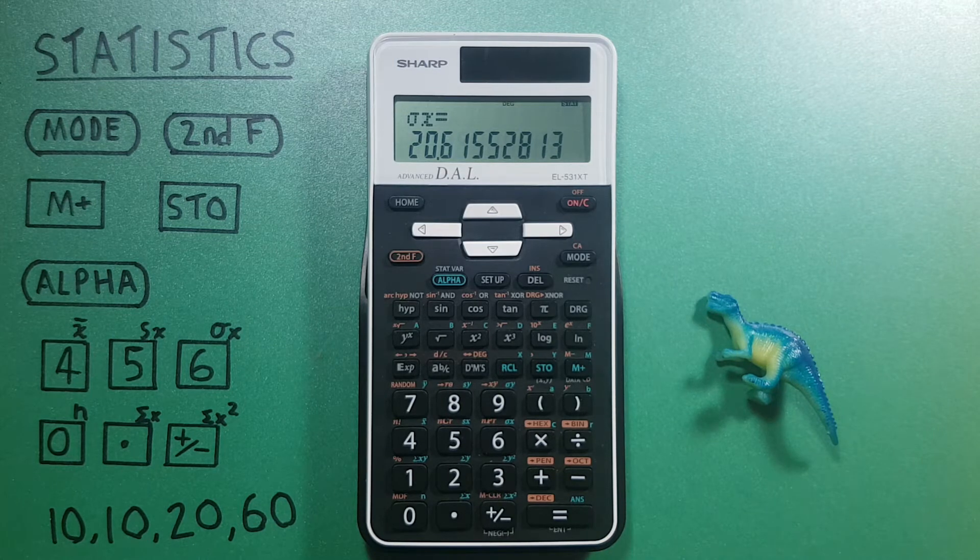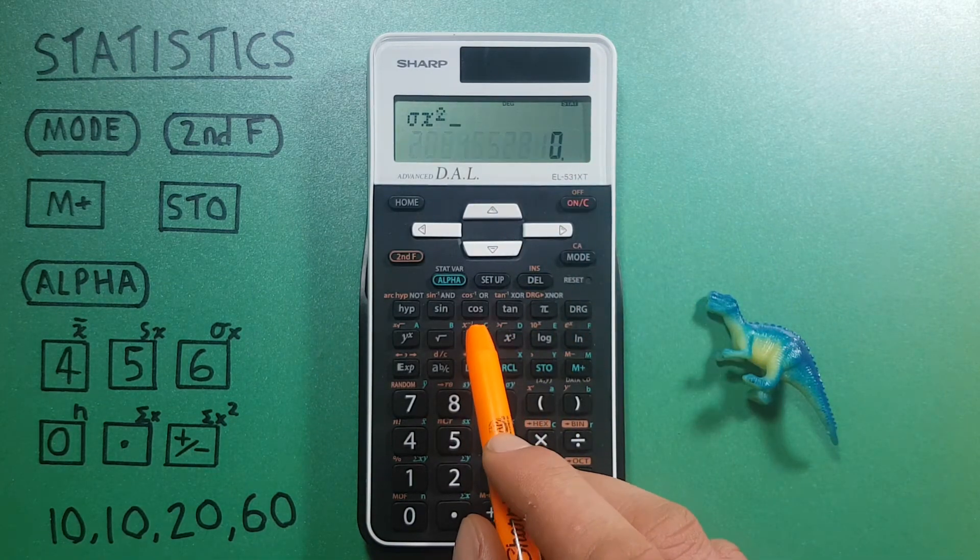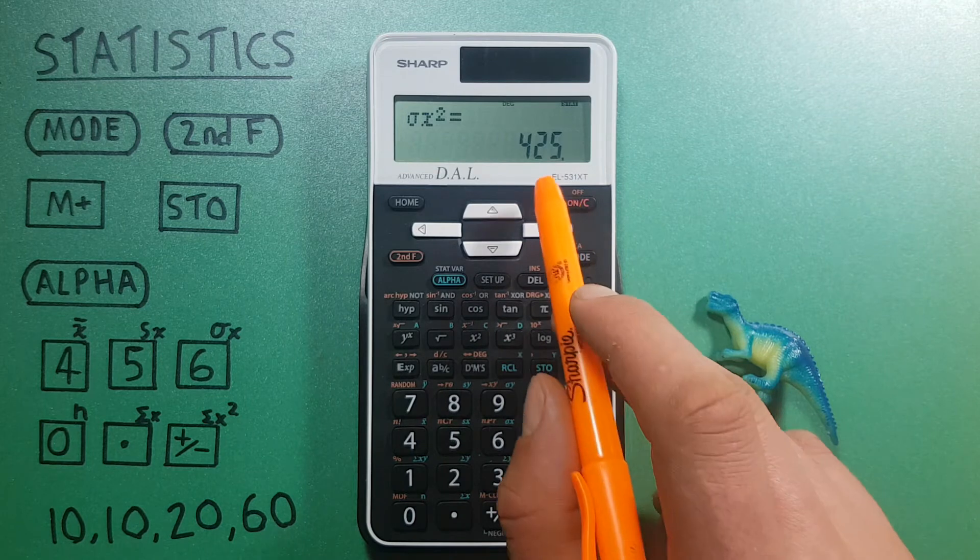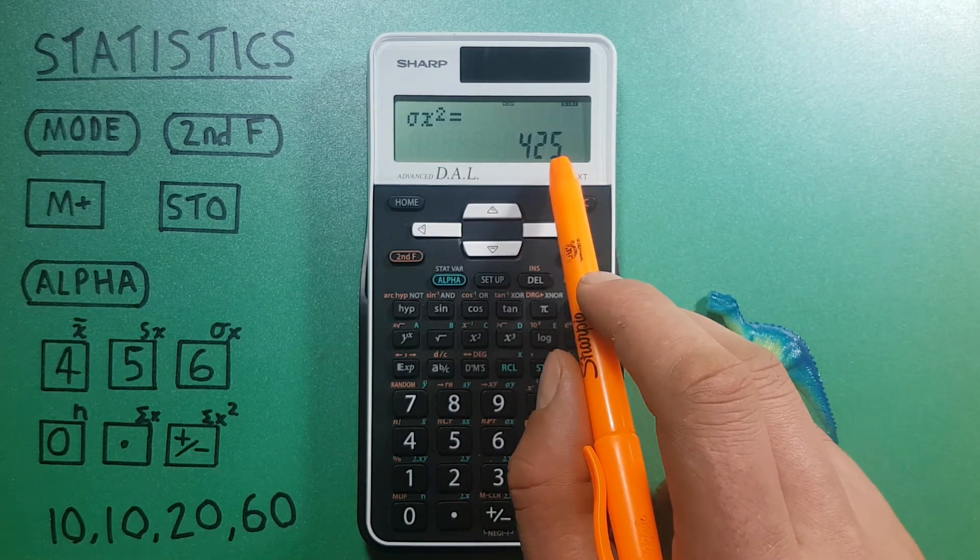Also, if you wanted to get the variance for this, we would just have to use square root this standard deviation. So using the X squared key equals gives us a variance of that statistic. It's a useful trick to have.